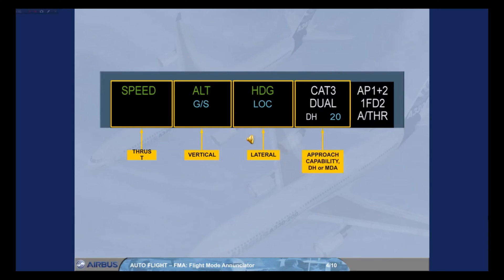The fourth column gives the approach capability of the auto flight system, and the DH or NDA. And the last column displays the engagement status of the autopilots, flight directors, and autothrust systems.